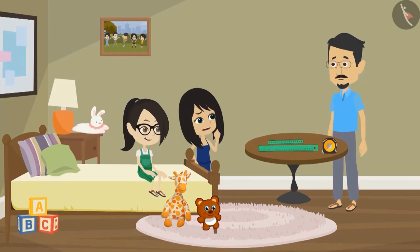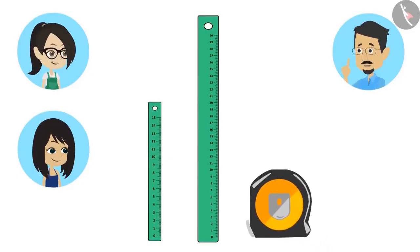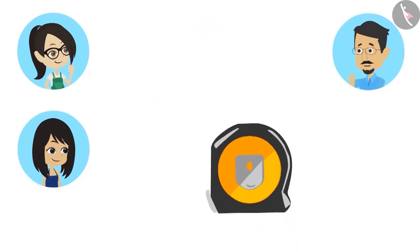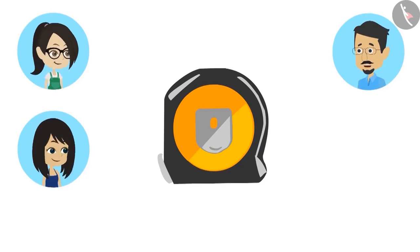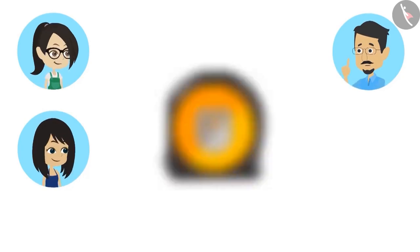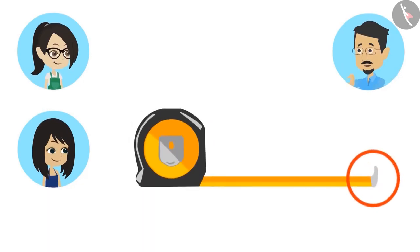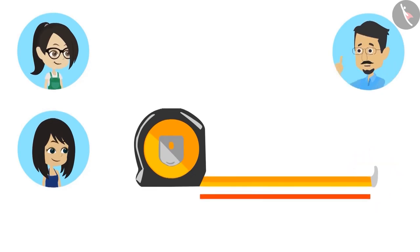But Papa, if we want to measure something longer than 30 centimeters, how will we measure it? For that, we will use this scale. But Uncle, this scale is very small. No, this scale is very long — so long that it can measure your height. Our height? With this scale? How? To use this scale, the handle outside it has to be held and pulled. Pulling this handle brings the scale out, and with this scale, we can measure the height.